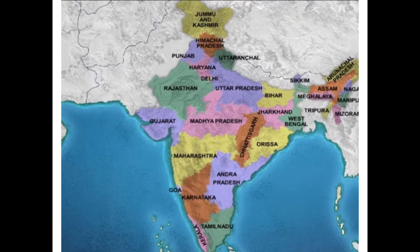India is a country where people of different communities and religions live together, so we celebrate different types of festivals. People from each religion — Hindus, Muslims, Christians, Sikhs, Parsis, Jains, and Buddhists — have their own cultural and traditional festivals. We also celebrate national festivals: Independence Day, Republic Day, and Gandhi Jayanti.